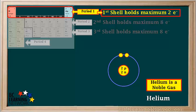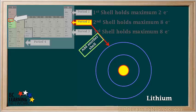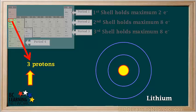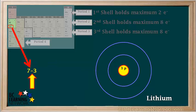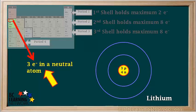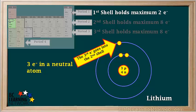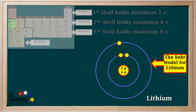Now we'll start with lithium, the first element in period 2. Since we're starting a new period, we need to add a second shell to our model. Lithium has three protons — 3p — and its atomic mass rounds to 7, so 7 minus 3 equals 4 neutrons — 4n. A neutral atom of lithium has three electrons: the first two go into the first shell, and the third electron goes into the second shell. This is the Bohr model for lithium: two electrons in the first shell and one electron in the second shell.